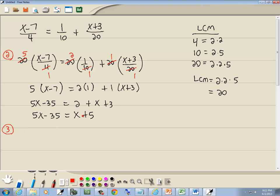Step 3. Get everything with an x on one side and numbers on the other. So I'll take this x, move it to the left side, and I'll take the negative 35 and move it to the right side.